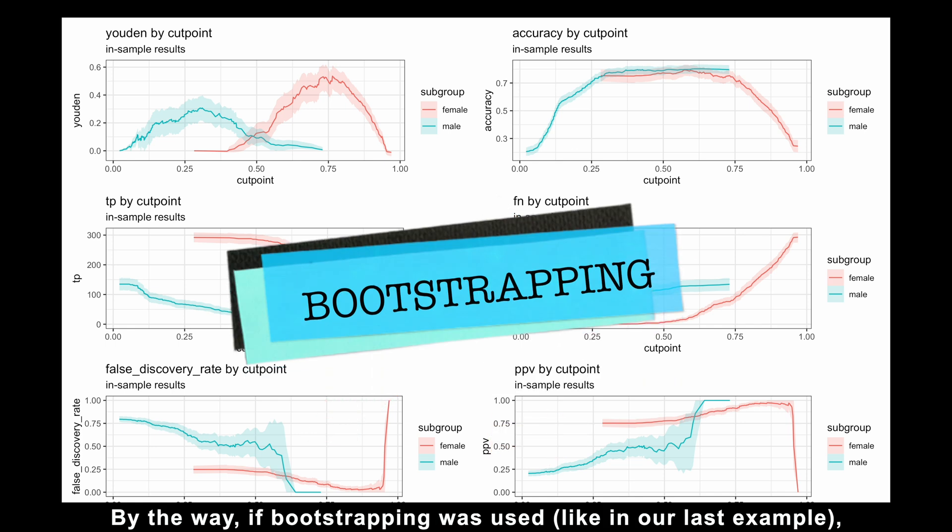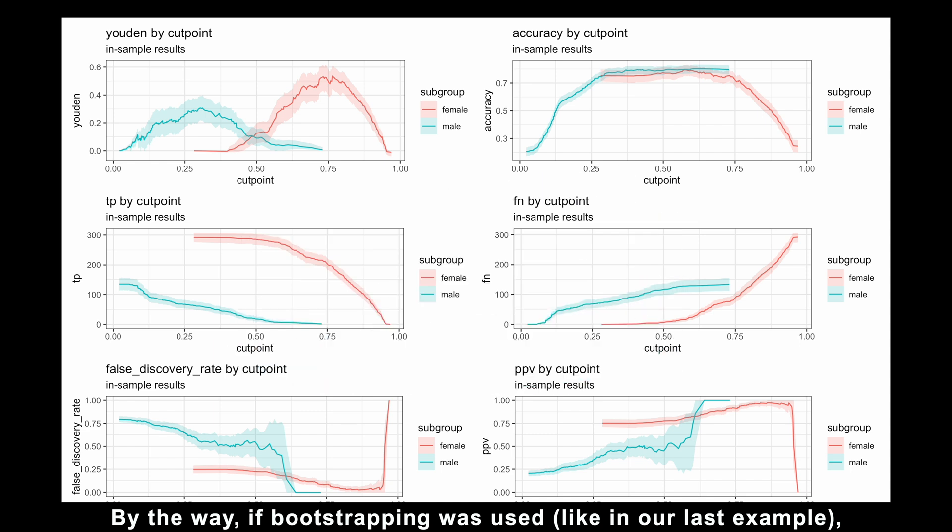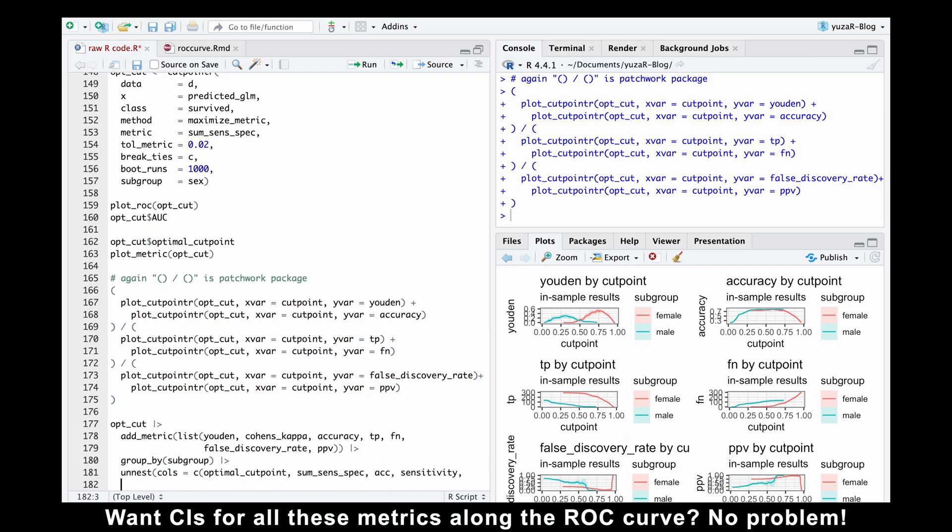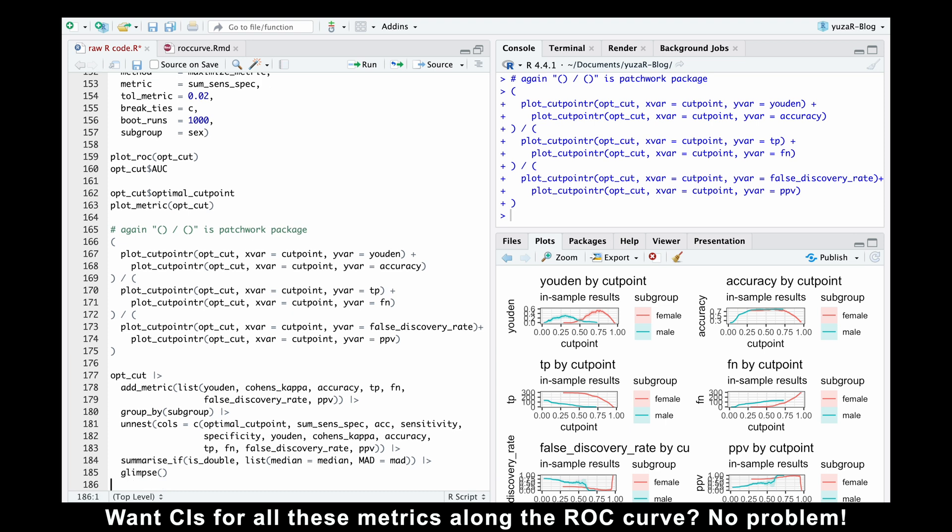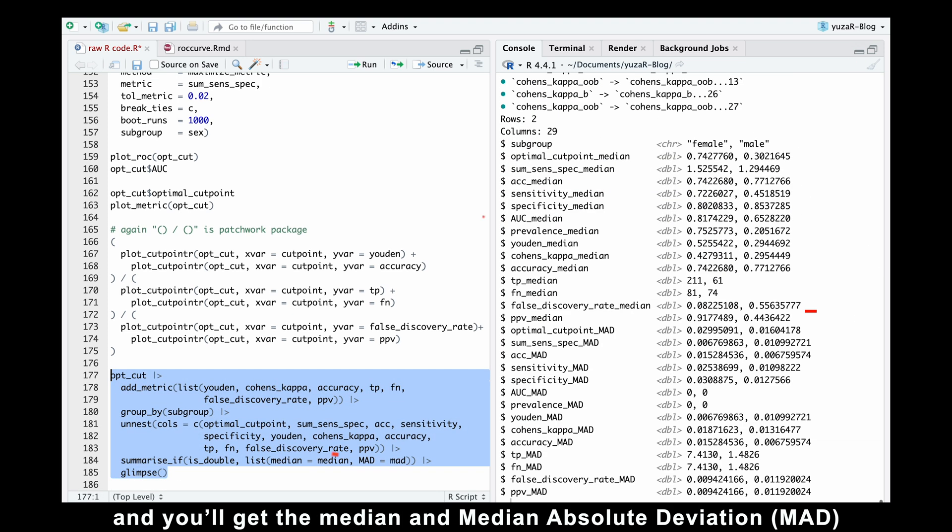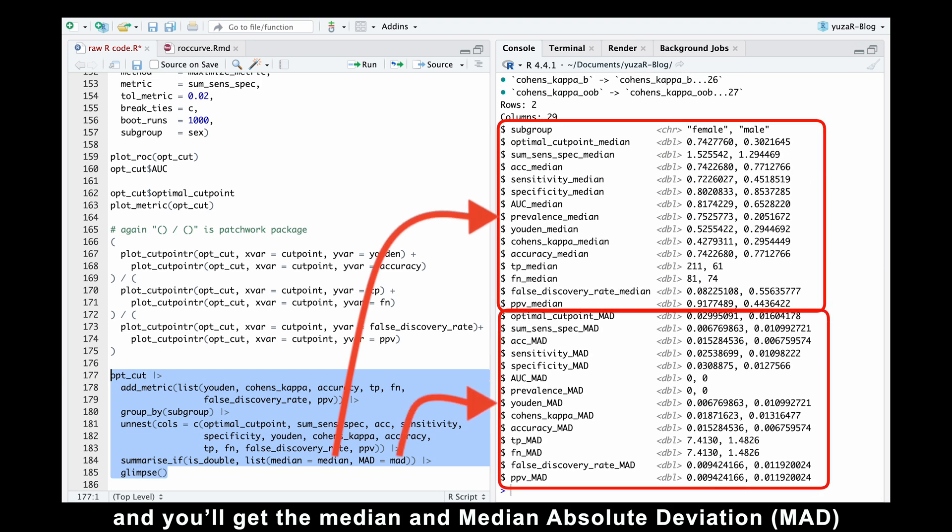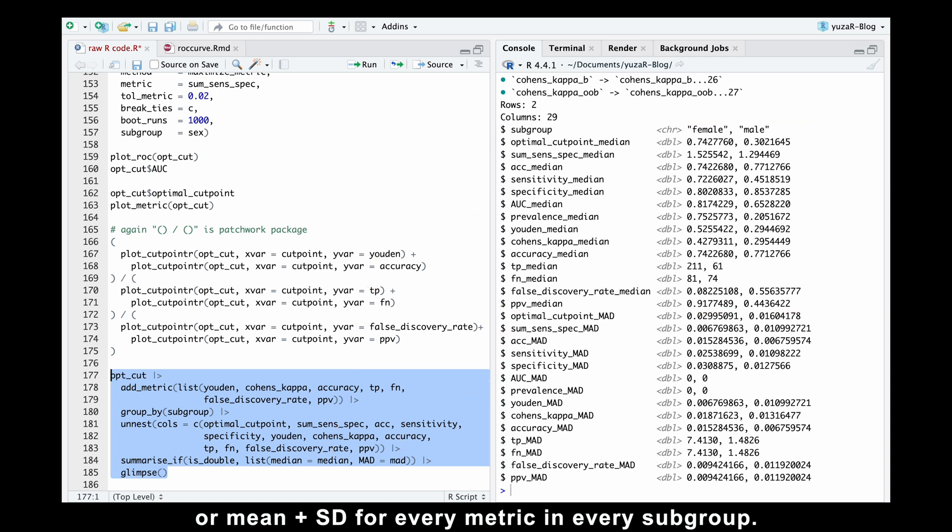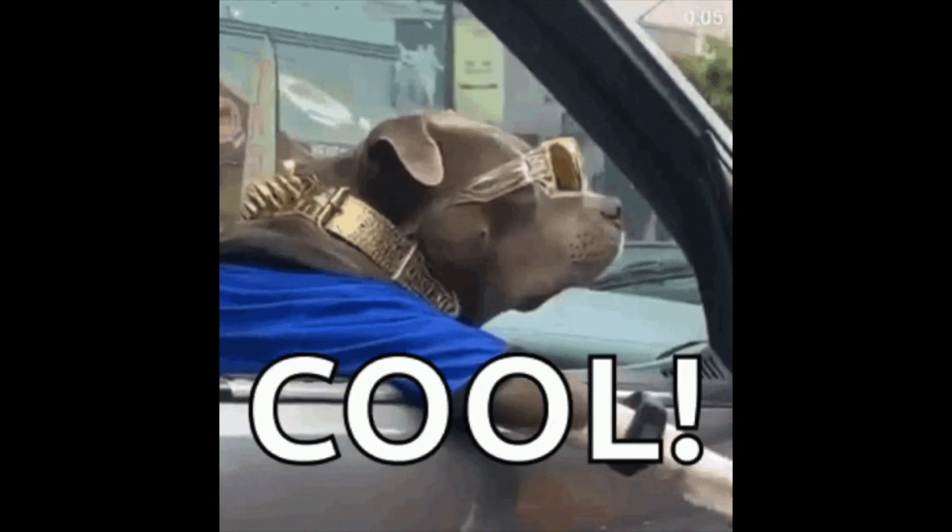By the way, if bootstrapping was used, like in our last example, bootstrapped confidence intervals will be automatically used and included in the plot. Want confidence intervals for all these metrics along the ROC curve? No problem. Just add any metric to your opt cut object, and you'll get the median and median absolute deviation, or mean plus standard deviation, for every metric in every subgroup. How cool is that?